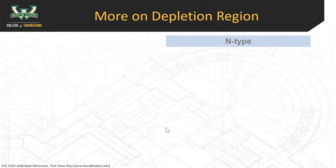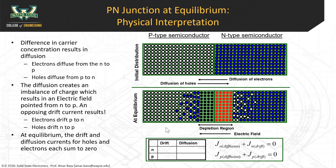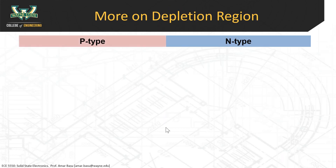Let's say we take an N-type semiconductor and a P-type semiconductor and put them next to each other. I want you to think about the four carrier processes. What are the four carrier processes that happen here? Generation, diffusion, drift, and recombination.